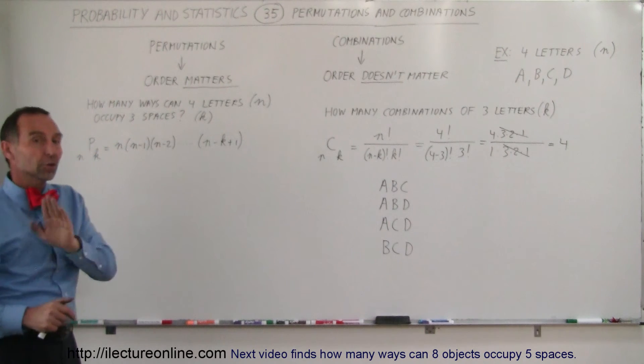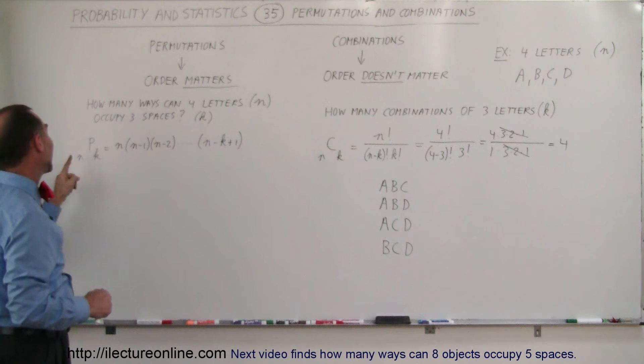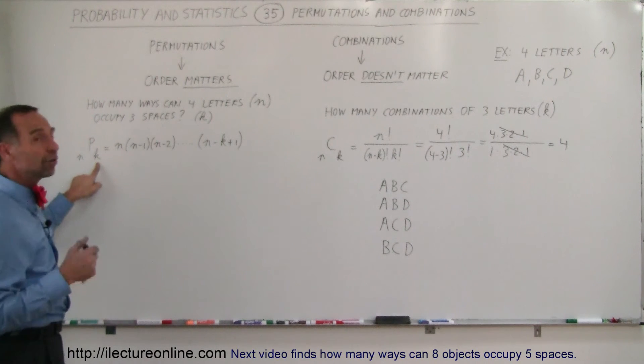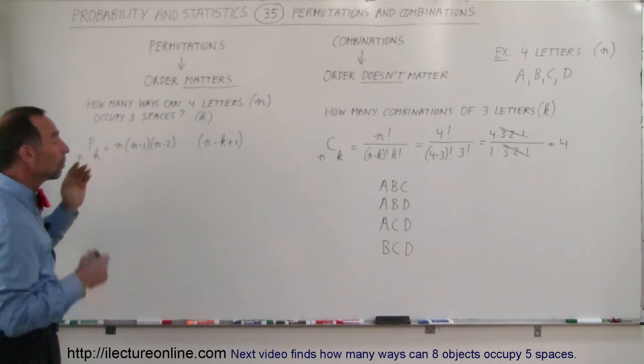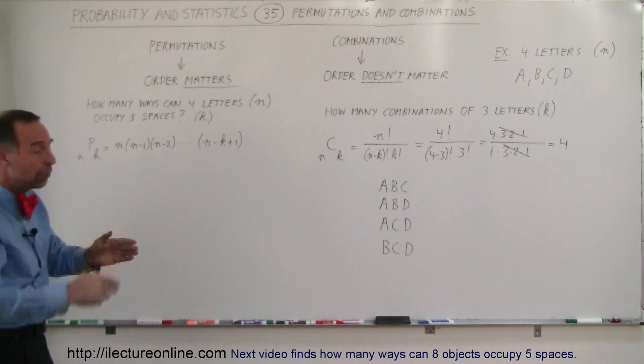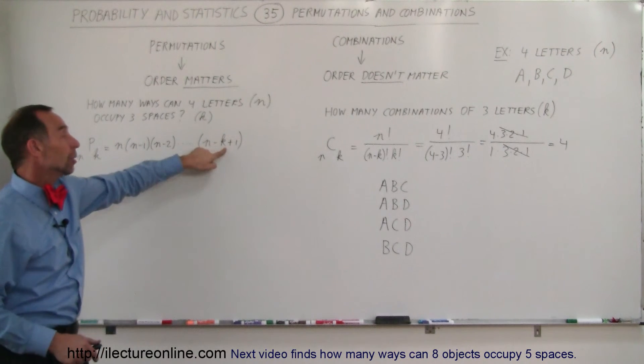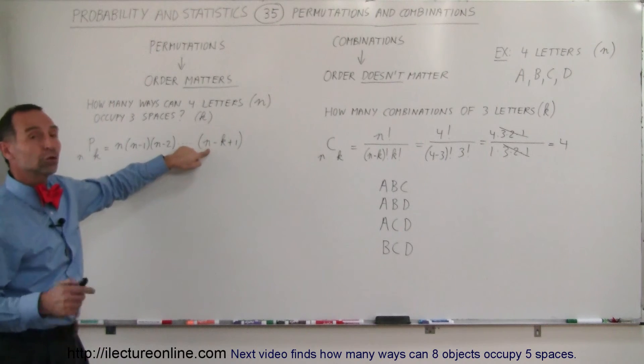There's three spaces K. The way you find that is the number of permutations when you have N possible letters and K possible spaces is equal to the product of N times N-1 times N-2 times N-3 and so forth until you get to N-K plus 1. K being the number of spaces, N being the total number of letters.